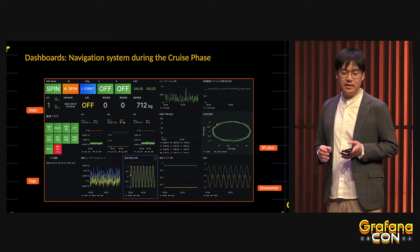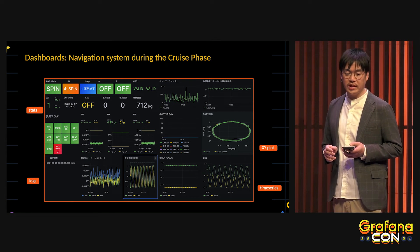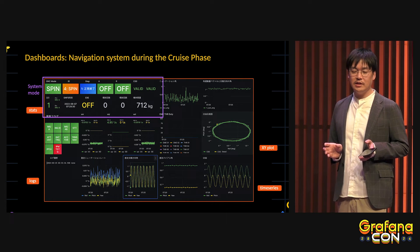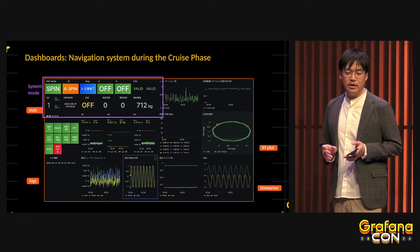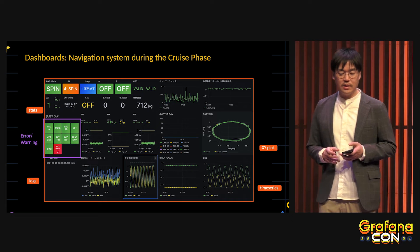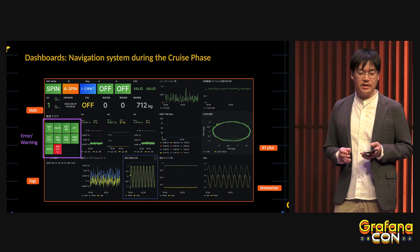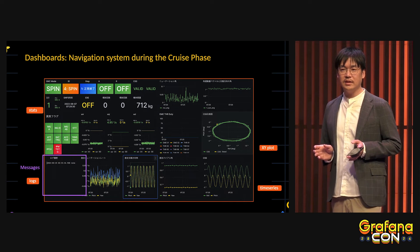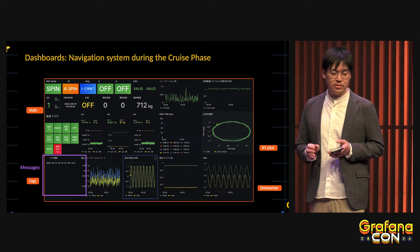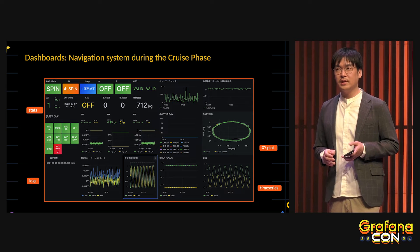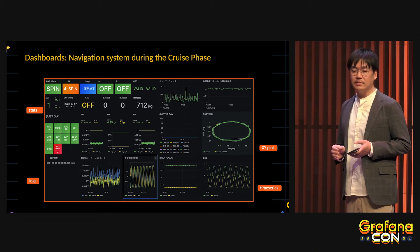This is the dashboard for the navigation system during the cruise phase. We built it easily by connecting InfluxDB with Grafana. In this area we monitor system status; in this area we monitor error or warning status; and in this area we monitor log messages generated by ground processing, using the stat and log panels. On the right side, we monitor attitude, attitude changes, and solar angle using X-Y plots and time series graphs.